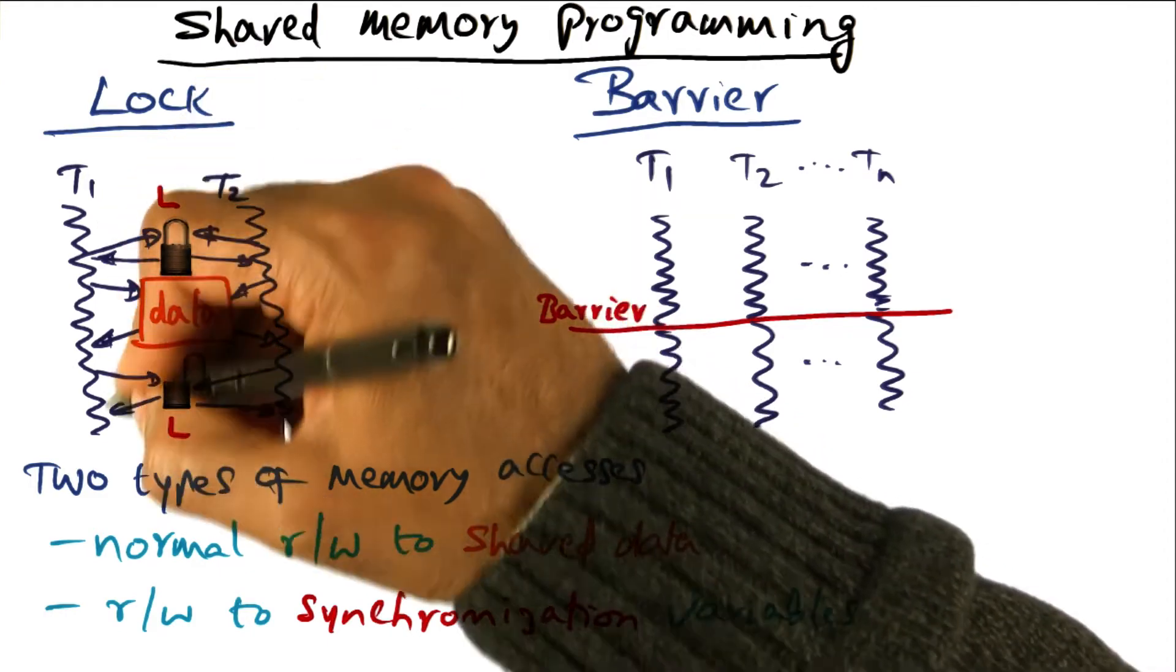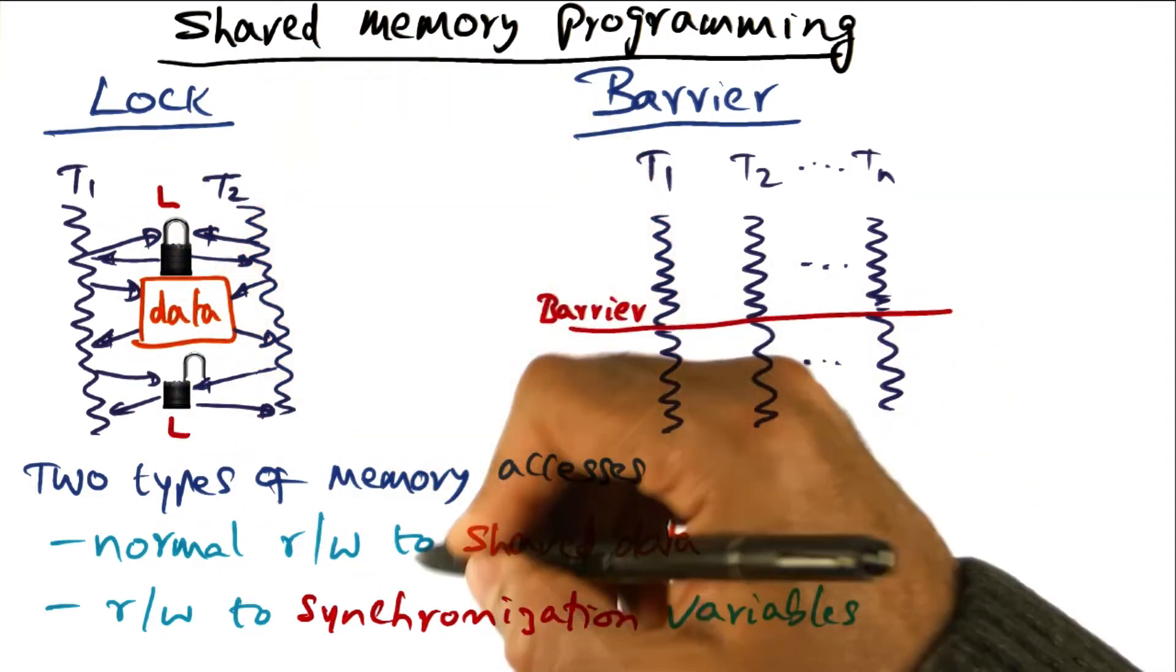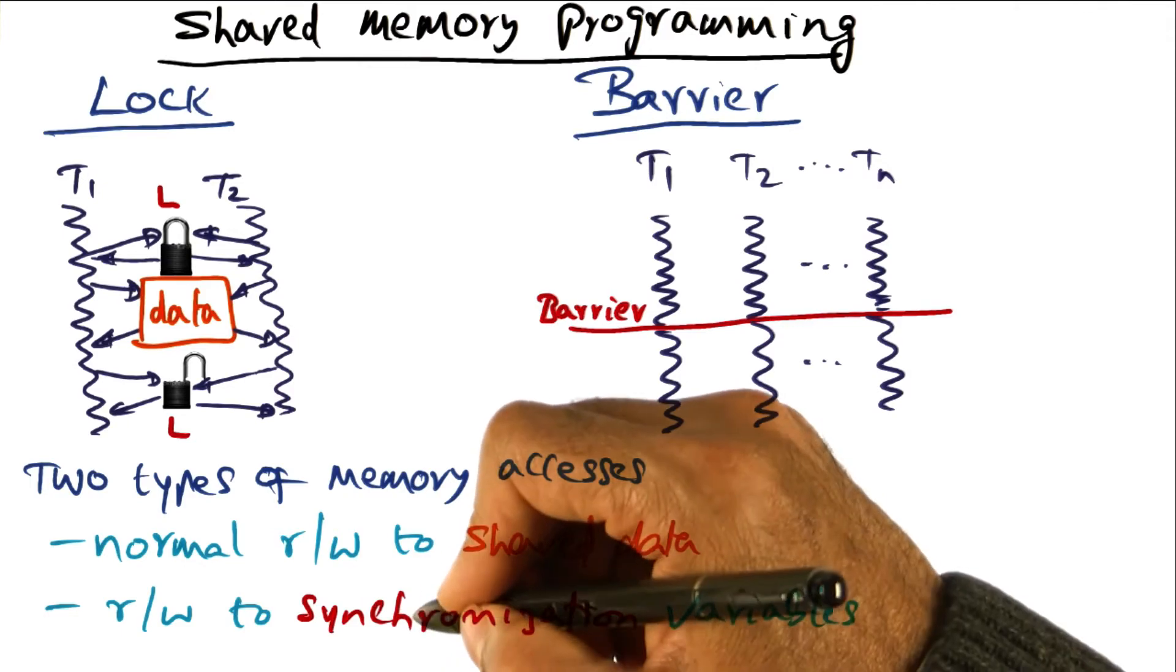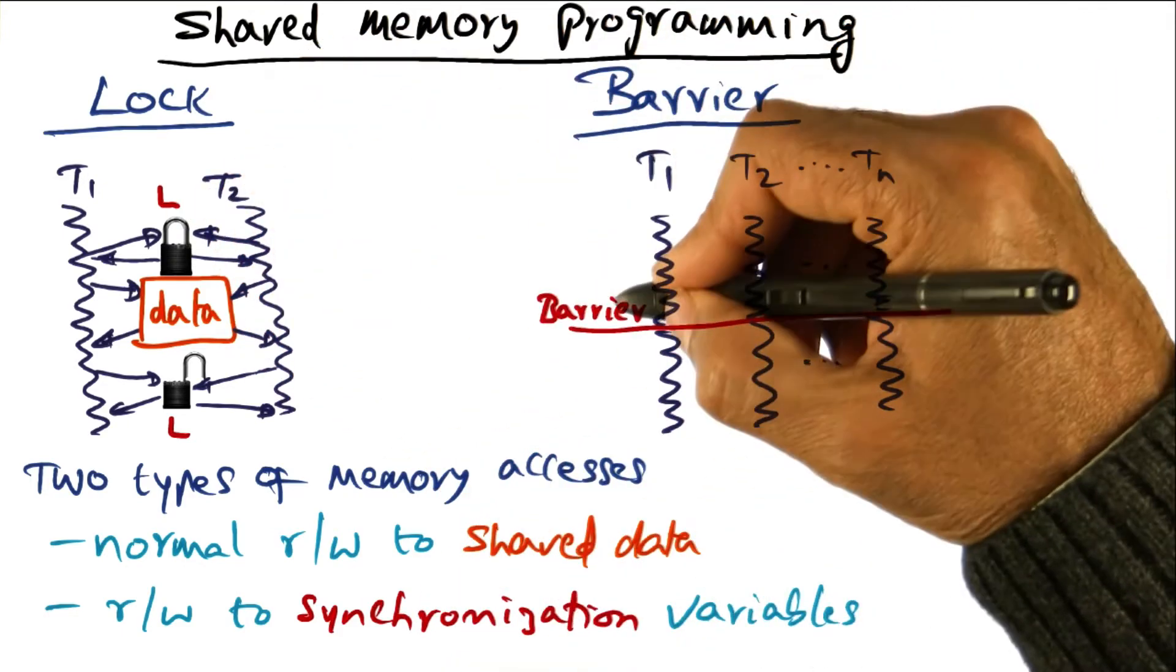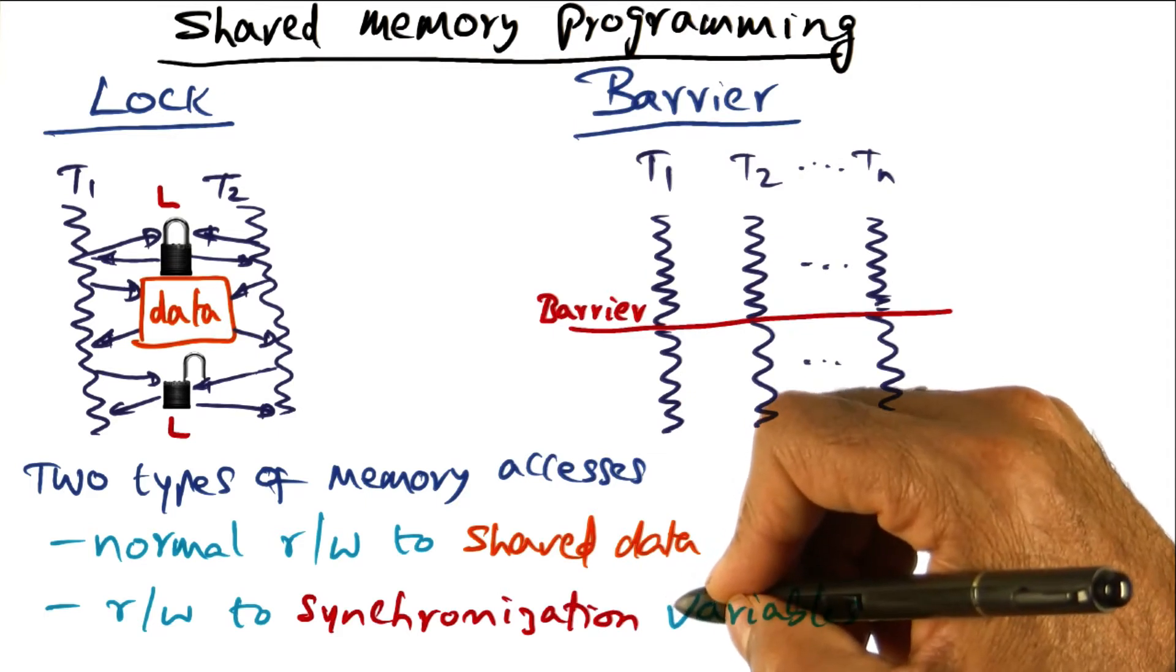that is being manipulated by a particular thread. The second kind of memory access is going to be for synchronization variables that are used in implementing locks and barriers by the operating system itself.